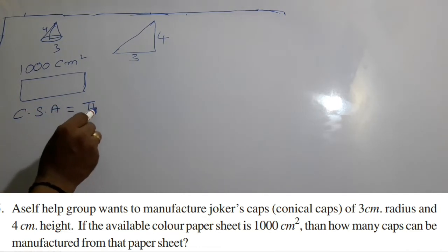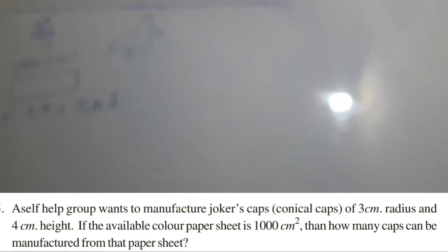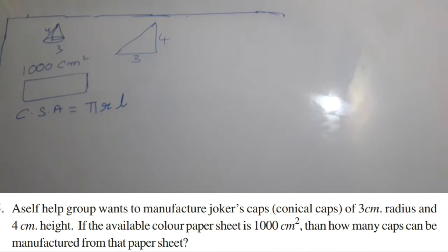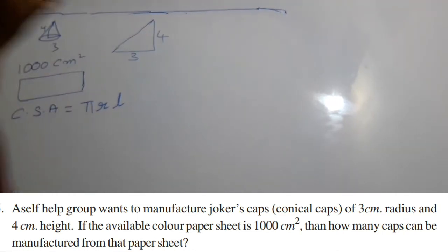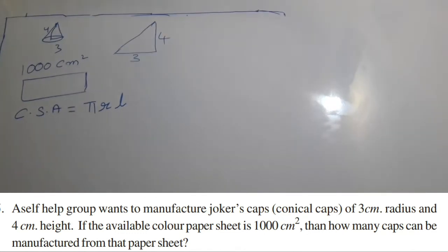The formula for curved surface area of a cone is πrl, where l is slant height. So here first we need to find the slant height. Looking at the triangle, it is a right angle triangle, so we will apply the Pythagorean theorem.